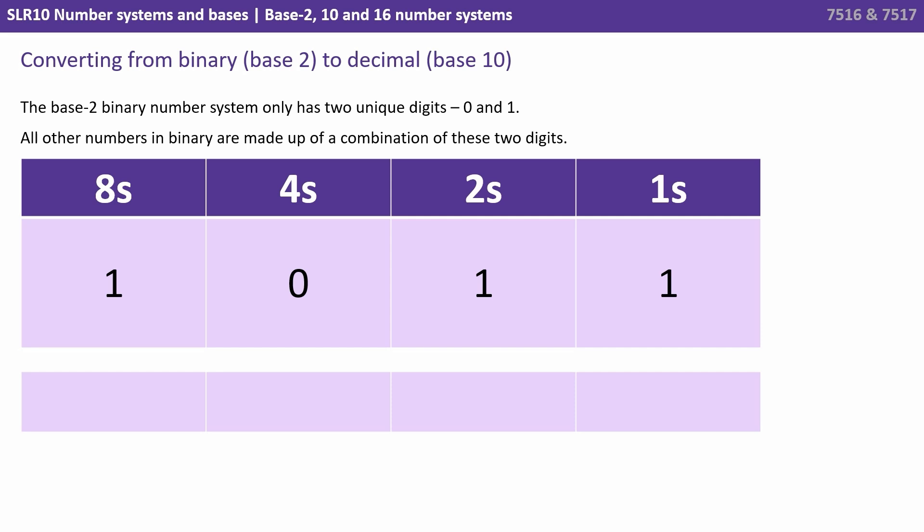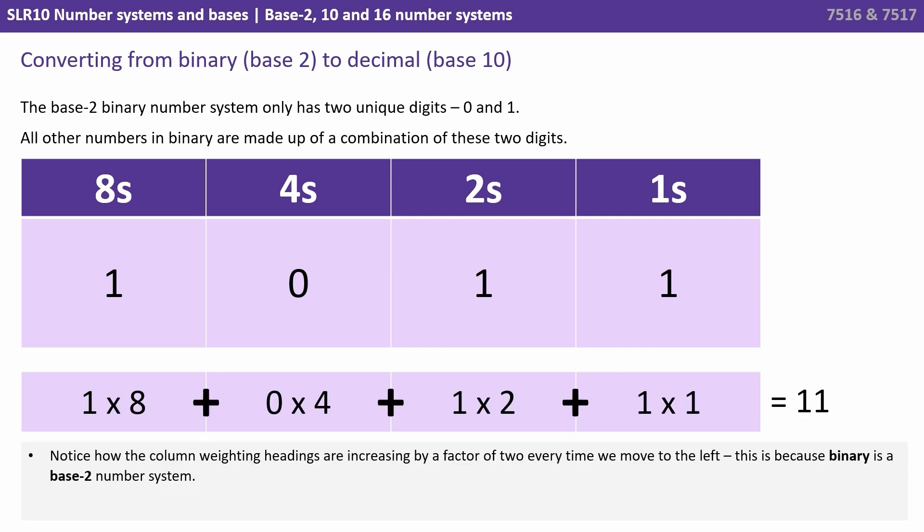How about the number 1011? Well that's an 8, no 4s, a 2 and a 1. 8 plus 2 plus 1 is 11. So the number 1011 in base 2 binary is 11 in base 10 decimal. Notice how the column weightings and headings are increasing by a factor of 2 every time we move to the left. This is because binary is a base 2 number system.